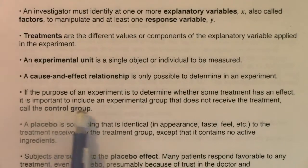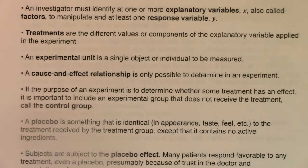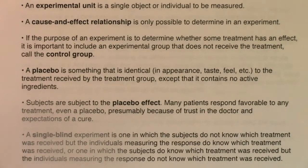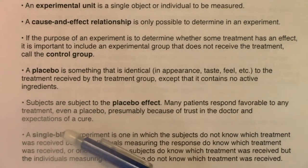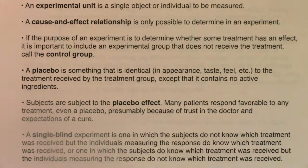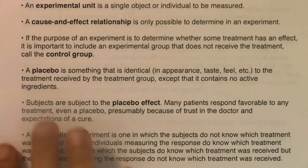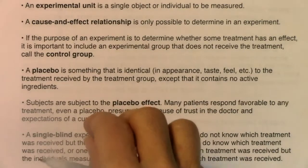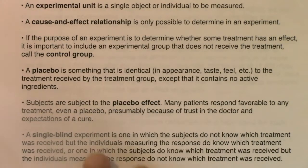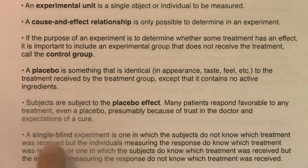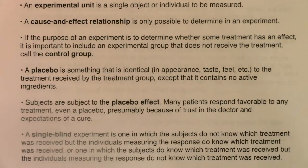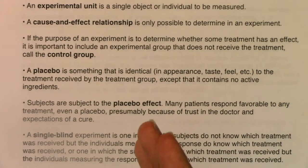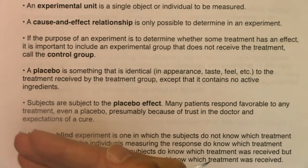There's not really a control group here because there were two different types of movies and no placebo. We were just comparing two different treatments. In terms of single versus double blind, at best this could be a single blind experiment. The kids know what type of movie they're watching, so there's no way to blind the kids. But we could blind the folks counting the crackers — if two lab techs went into those movie rooms and counted crackers without knowing which type of movie had been shown, it would at least be single blind, preventing any bias from affecting their count.